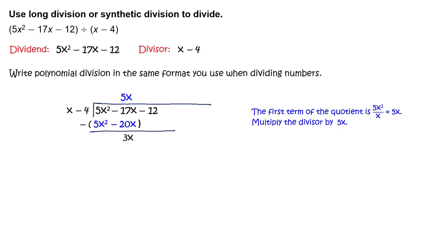Subtract to get 3x. Bring down negative 12. The next term of the quotient is 3x divided by x which equals 3.